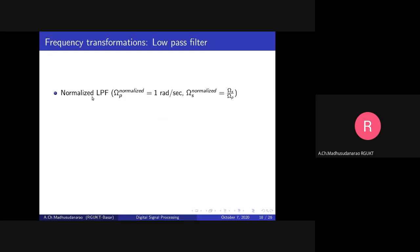Here are the specifications for the normalized low pass filter. Normalized low pass filter means the passband cutoff frequency will be equal to 1 radian per second — Omega P normalized equals to 1 radian per second. And if you consider the stopband cutoff frequency for the normalized low pass filter to be equal to Omega S by Omega P, then we are going to get the following.